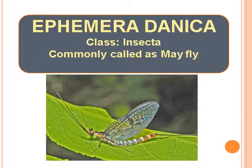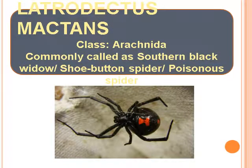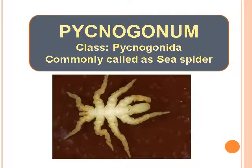Ephemera Danica — Class Insecta, commonly called as Mayfly. Coccinella — Class Insecta, commonly called as Ladybird Beetle. Latrodectus Mactans — Class Arachnida, commonly called as Southern Black Widow or Shoe Button Spider or Poisonous Spider. Pycnogonum — Class Pycnogonida, commonly called as Sea Spider.